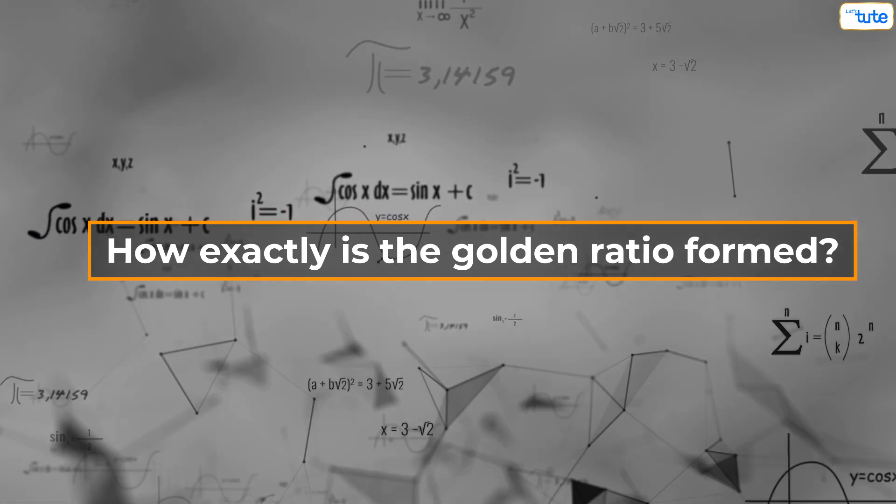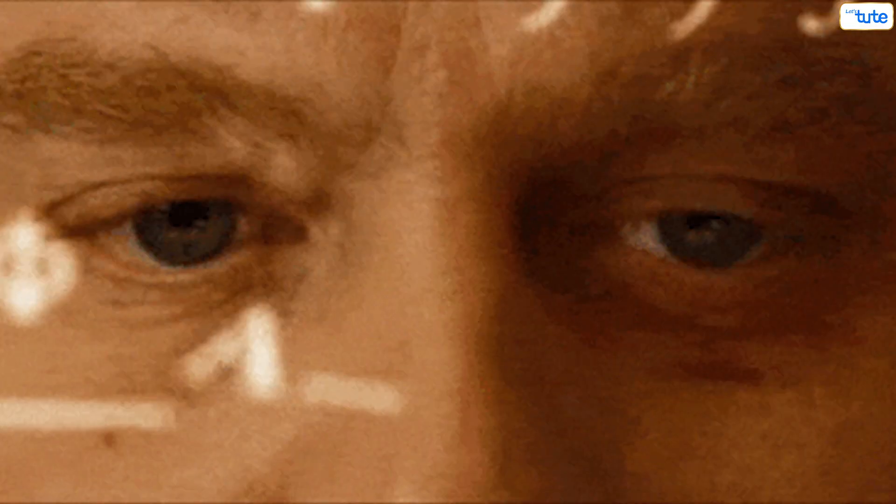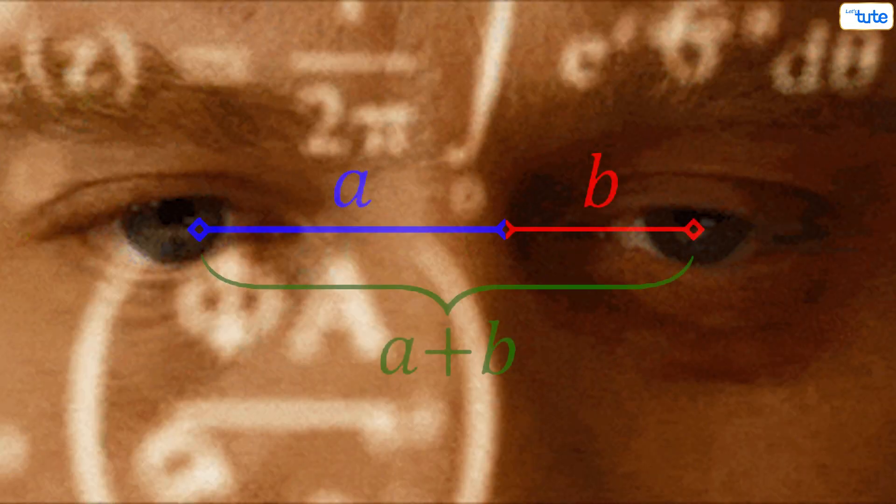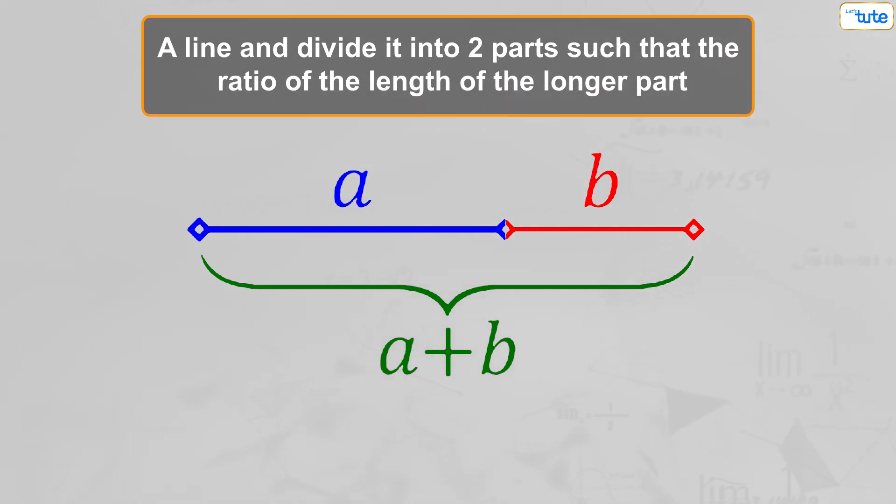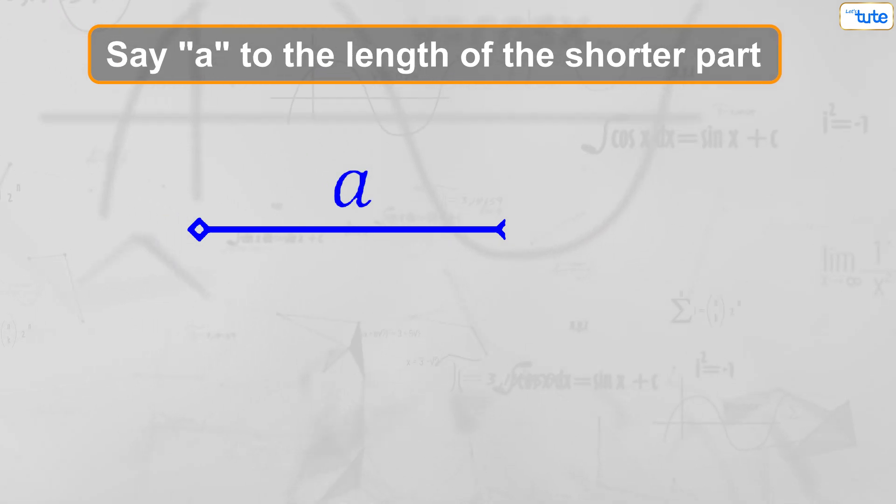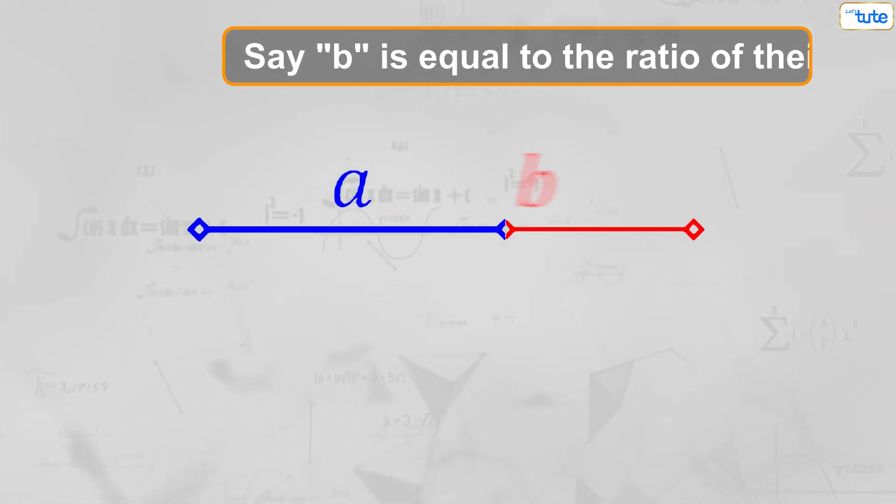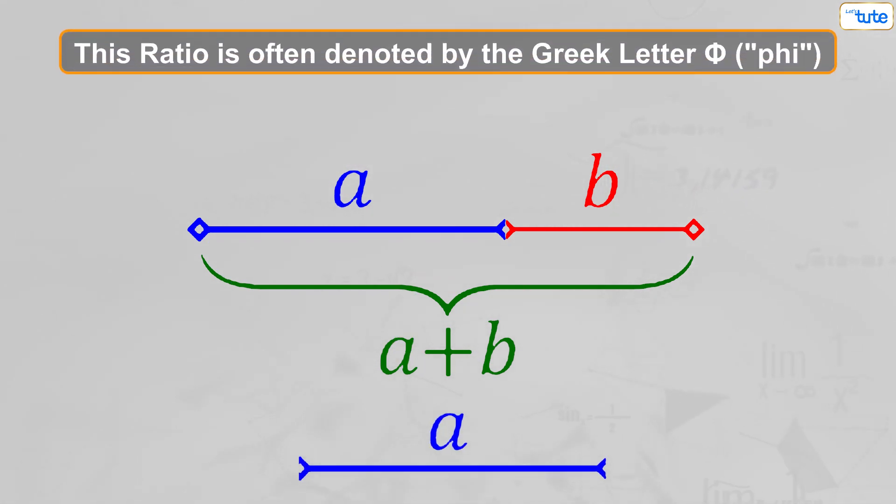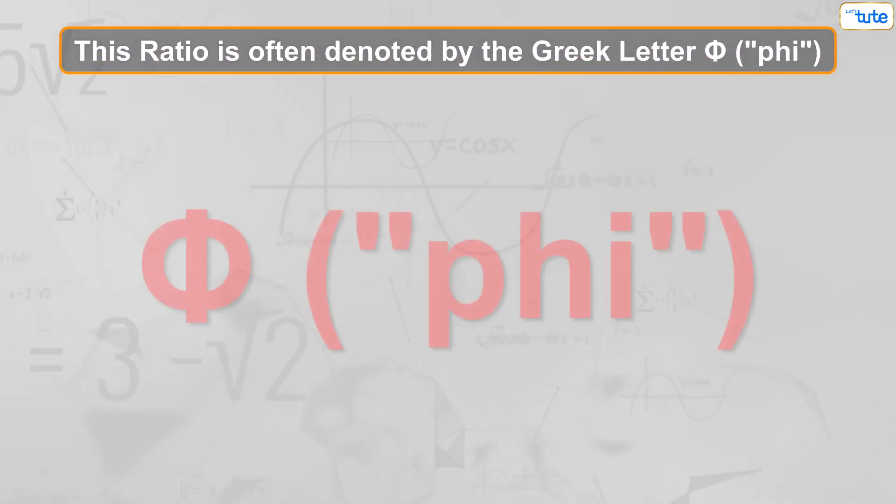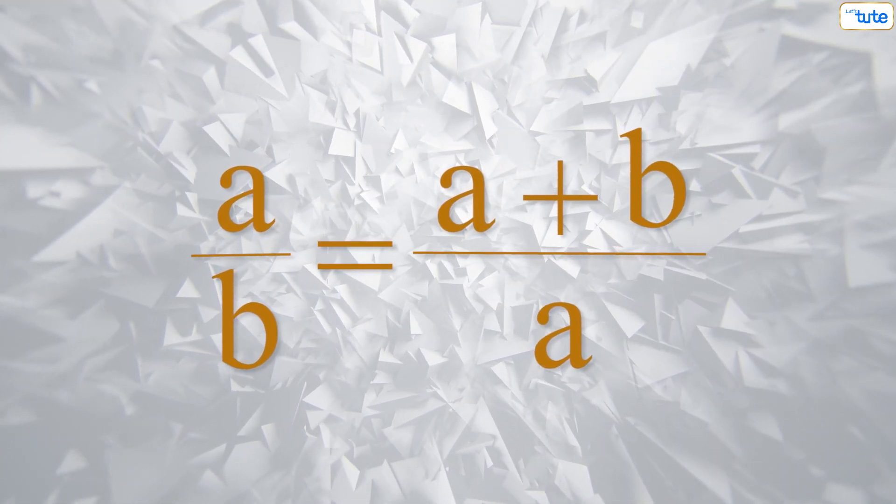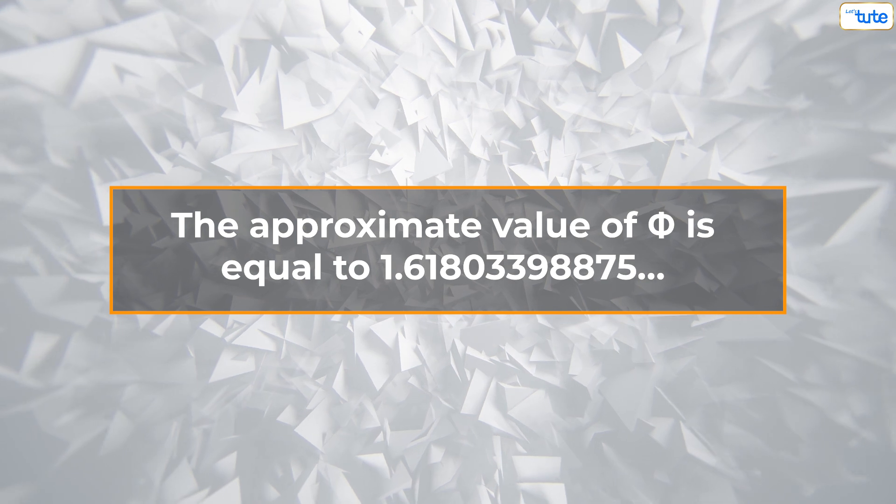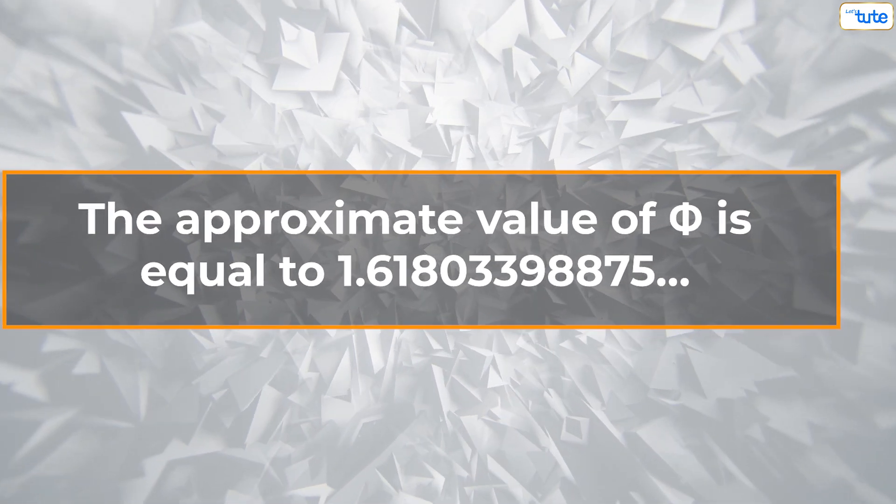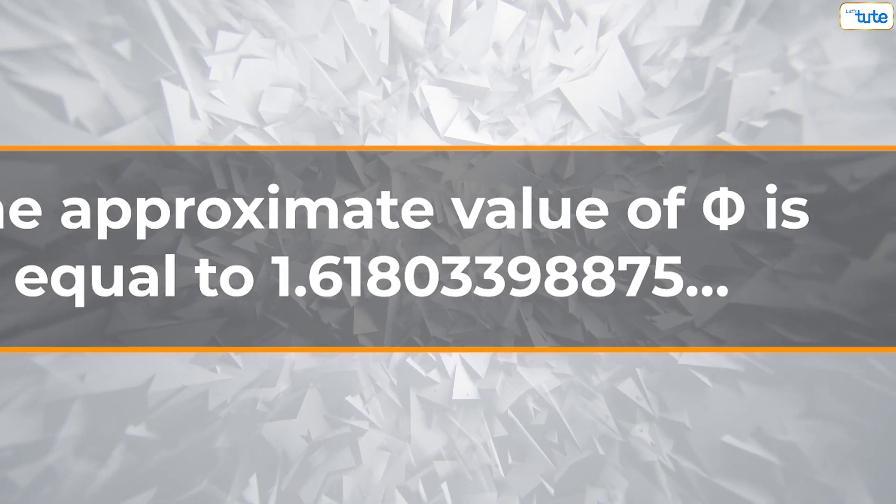How exactly is the golden ratio formed? To understand this in mathematical terminology, let's consider a line and divide it into two parts such that the ratio of the length of the longer part, say a, to the length of the shorter part, say b, is equal to the ratio of their sum a plus b to the longer length a. This ratio is often denoted by the Greek letter phi. (a + b) / a = a / b. The approximate value of phi is equal to 1.61803398875.